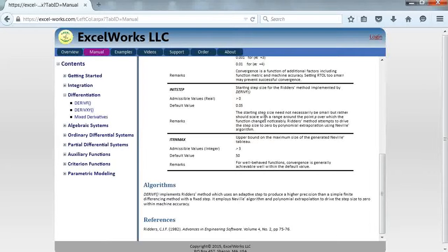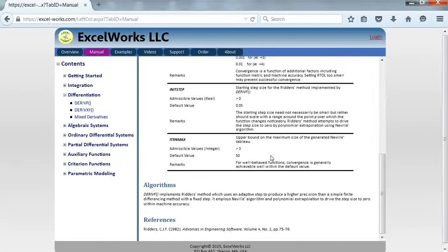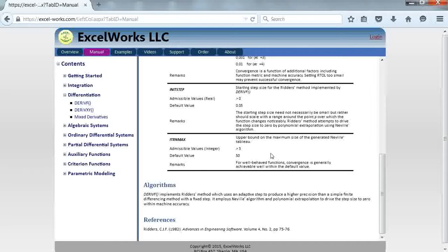Reder's method uses Neville algorithm and polynomial extrapolation to knock out higher terms in the series expansion of the function to drive the differencing step to zero within machine accuracy. We will demonstrate this through examples up to fourth order derivatives.